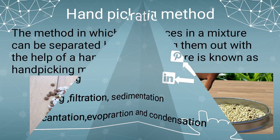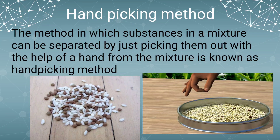The first method of separation is handpicking. In this method, we separate slightly larger-sized impurities like pieces of dirt, stone, and husk from wheat, rice, or pulses.